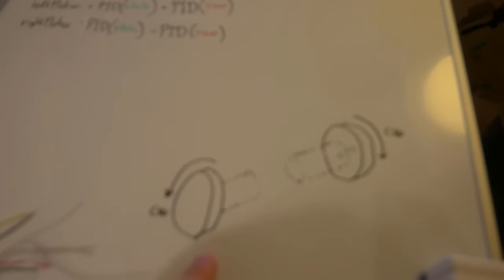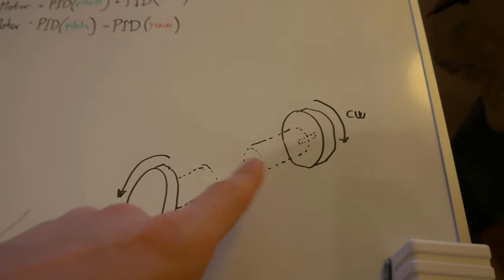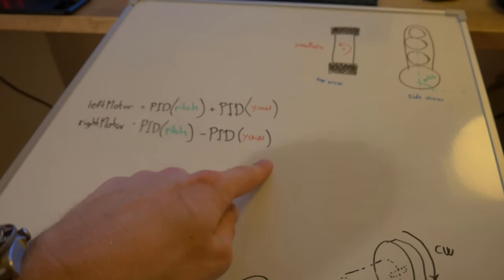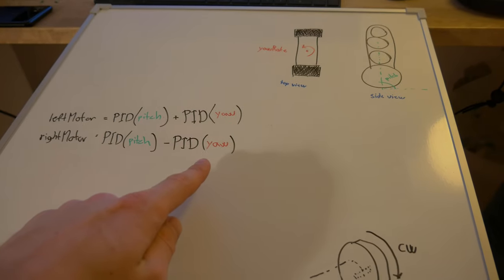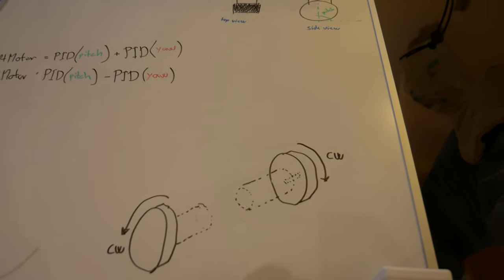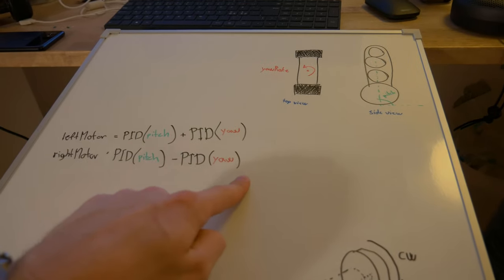This means that we somehow need to reverse the direction. We could do this by reversing the wires on the encoders, or we could multiply one of these lines by minus one. There are multiple ways. I think I'm just going to multiply one of these lines by minus one.